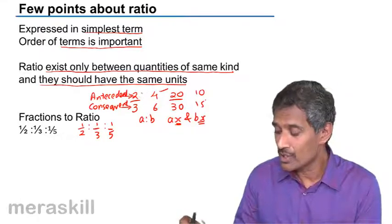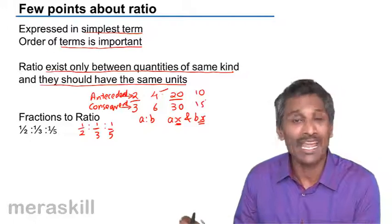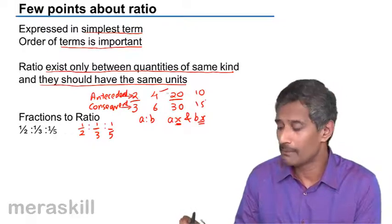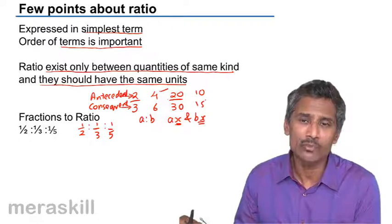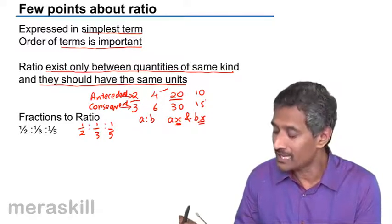So the antecedent and consequent of a particular ratio a is to b. The actual terms of the ratio, the actual quantities, could be anything which are in the ratio a is to b.